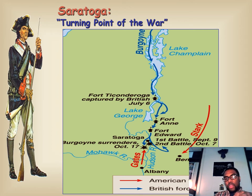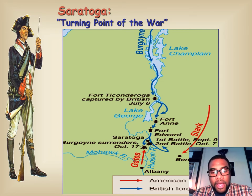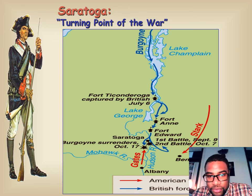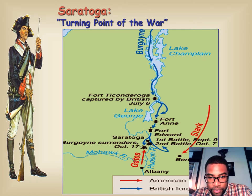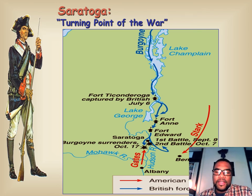Here you can see a map of the turning point of the war. British soldiers are coming down from the North, and American forces are moving up — it looks like in the New York area, as you can see the Hudson River and the series of battles. The first battle was on September 19th and the second battle was on October 7th. So this gives you an illustration of exactly where and when those battles were fought.